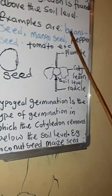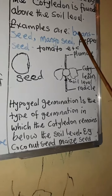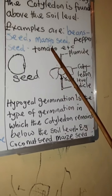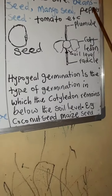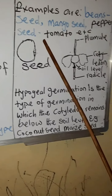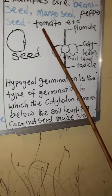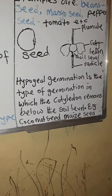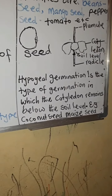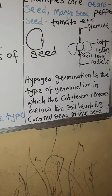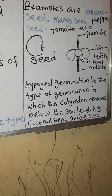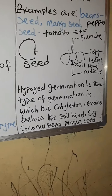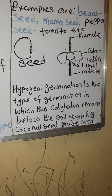Examples of epigeal germination: number one, we have bean seed; we have mango seed; we have pepper seed; we have tomato seed; and there are so many others.